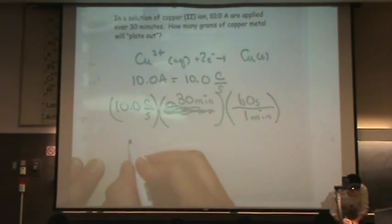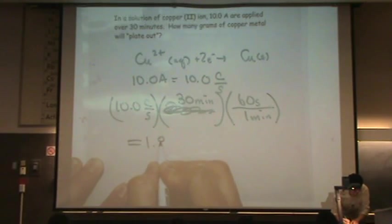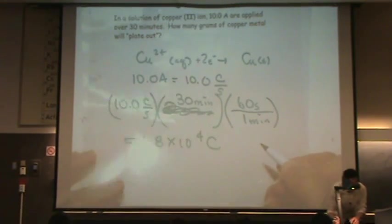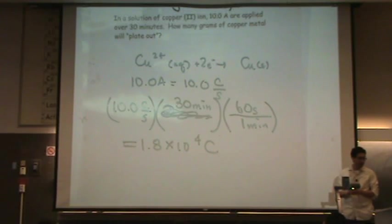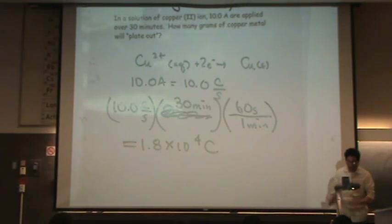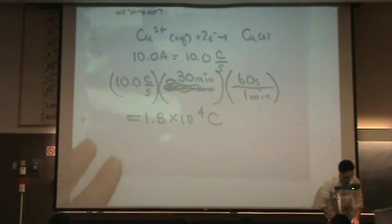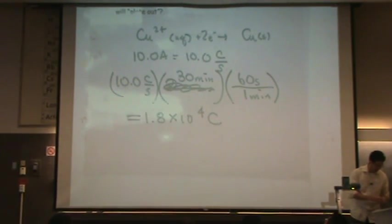This turns it out to be 1.8 times ten to the four. The seconds cancelled, so all I have left are coulombs. So that's the amount of charge going through. What I want to do now, I want to convert this to electrons and then finally to moles of copper. So let me show you how to do that. It's a pretty simple little conversion.